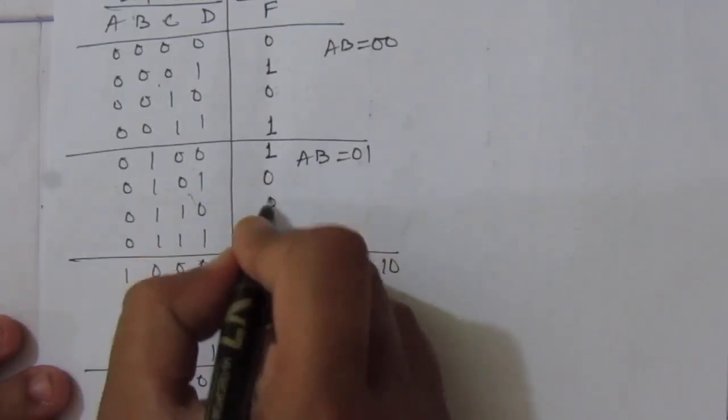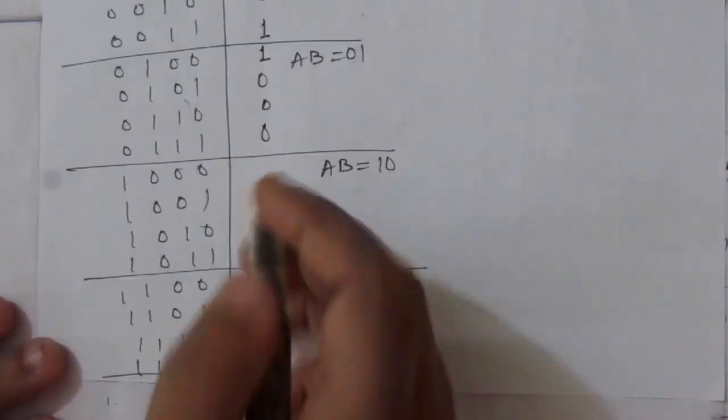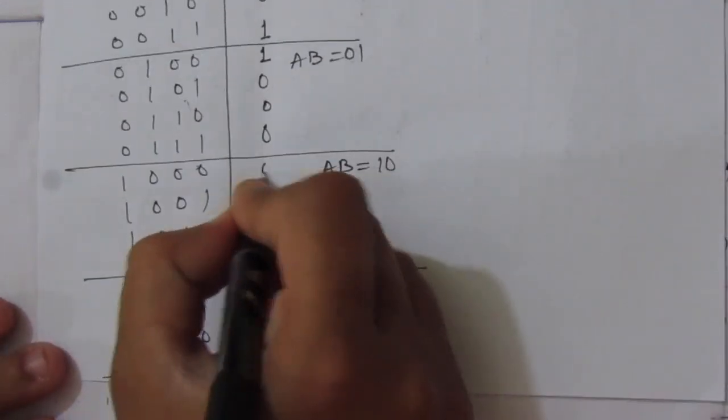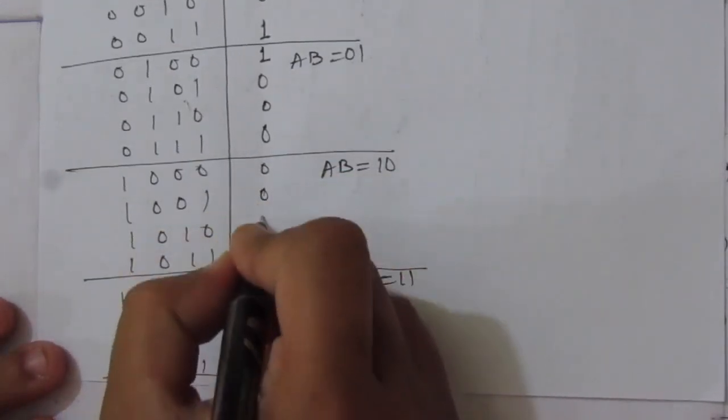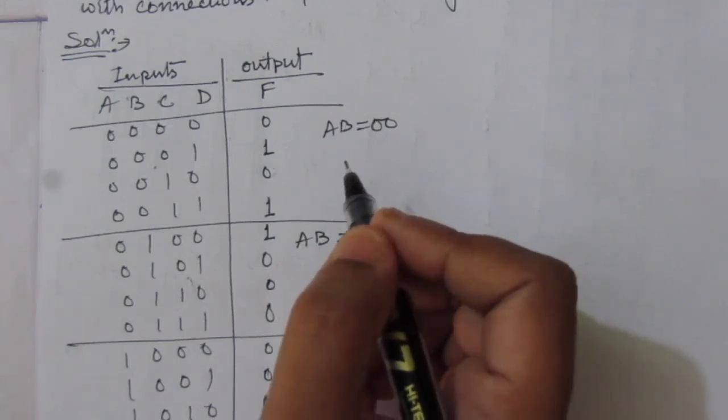The remaining positions will be 0. Now we have made the truth table.